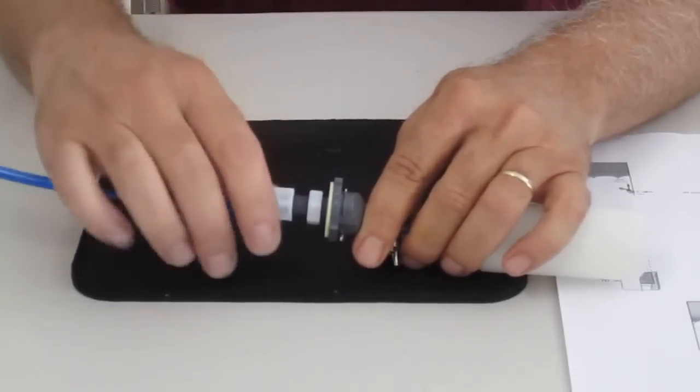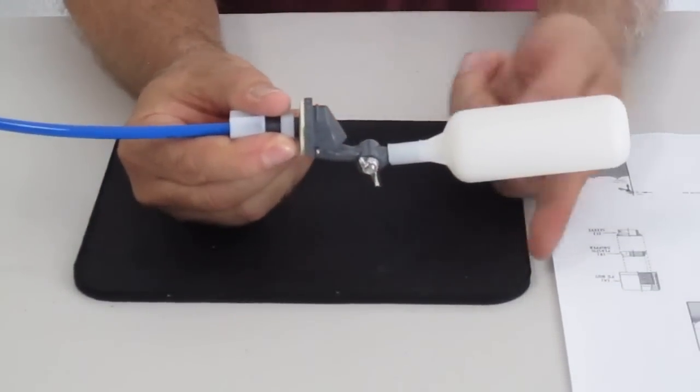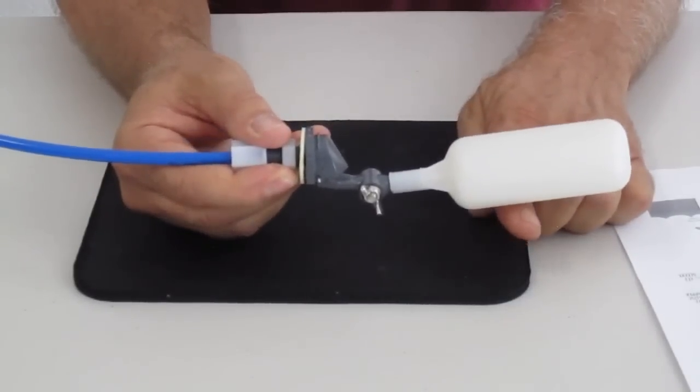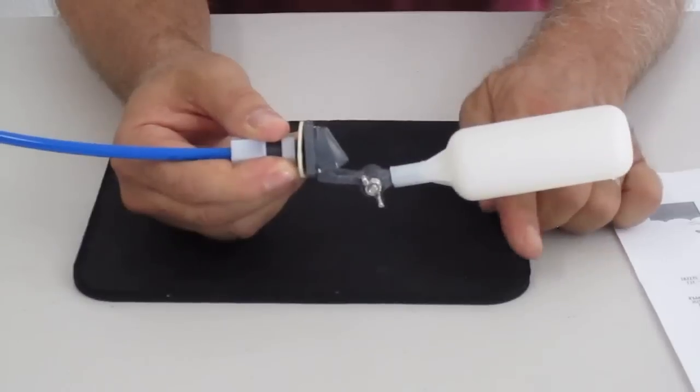Once this is installed, tighten it down good and tight. At this point, your water level is going to come up and it's going to shut this valve off.